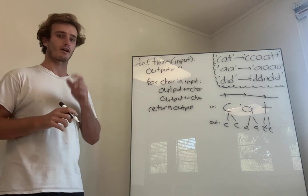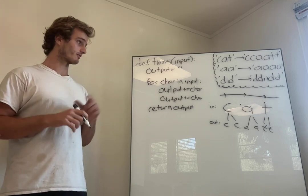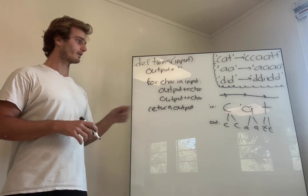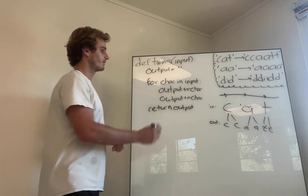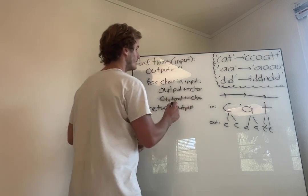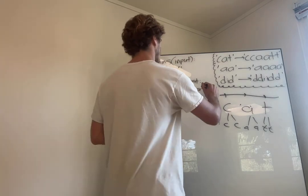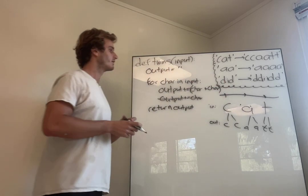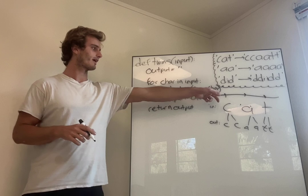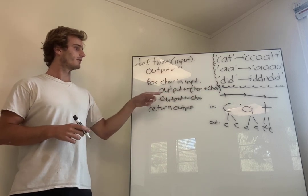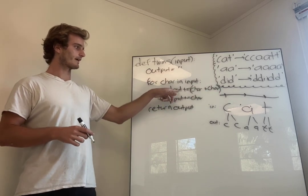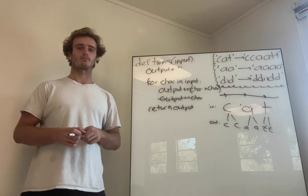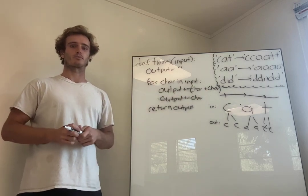The last thing I'm going to show you is just a way to make this a little bit shorter and cleaner. Instead of saying output plus equals car twice, one thing you can do is say output plus equals car plus car. Each time we enter this loop, we're going to take output and add 'car' twice, all in the same line — that's a cleaner way of writing this program.